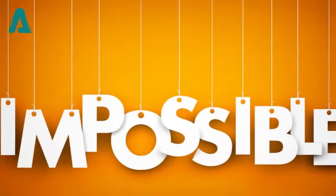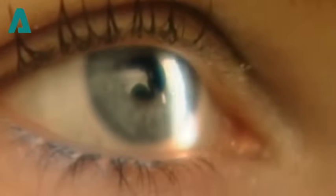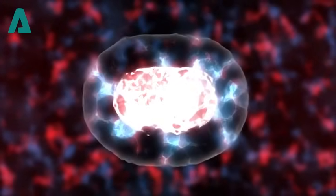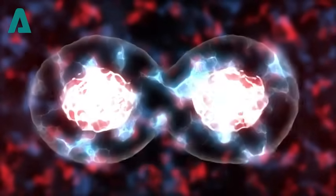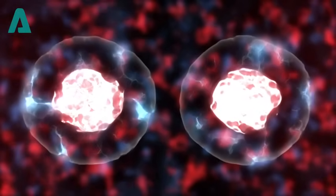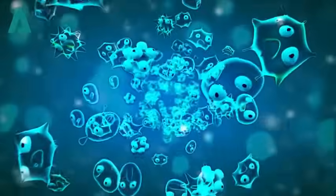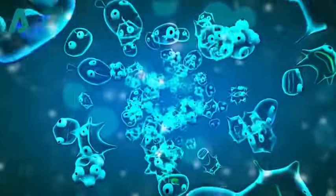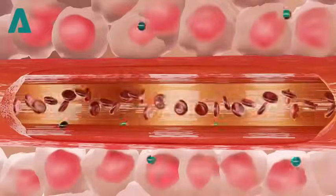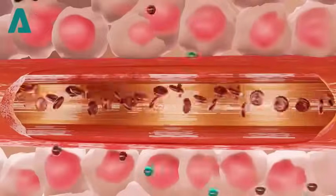But what exactly causes aging? At its core, aging is a result of cellular processes. Each time our cells divide, the protective caps at the ends of our chromosomes called telomeres shorten. Over time, these caps become too short to protect the DNA, leading to cellular damage and the aging process we experience.